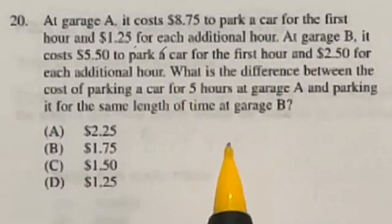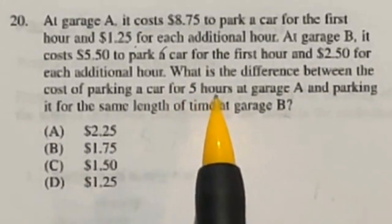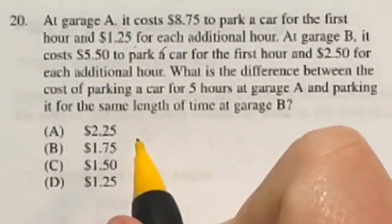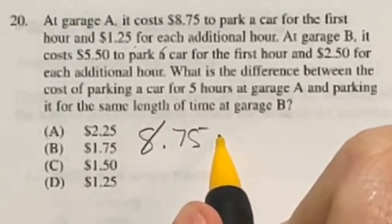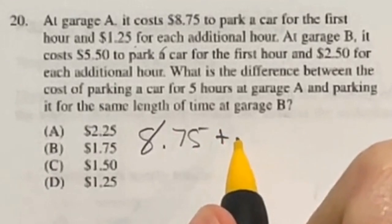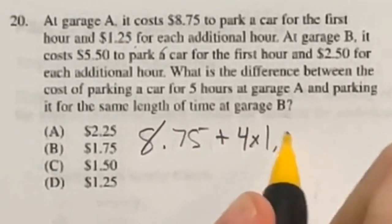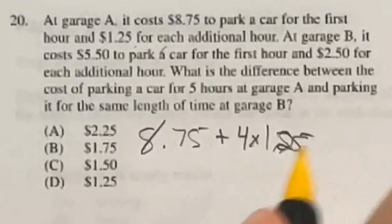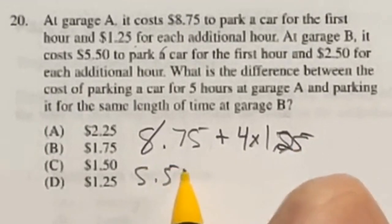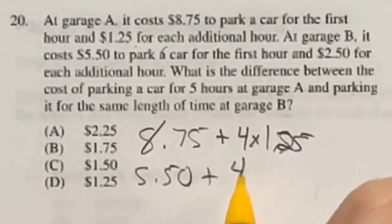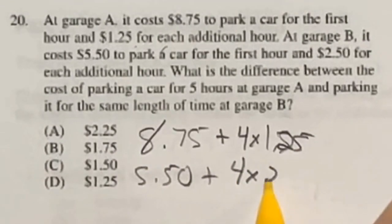So you're looking at two different garages here, A and B. You're going to be there for 5 hours. Now for garage A, for that first hour, it's going to charge $8.75. And then for the next 4 hours, it's going to be $1.25 each. So 4 times that $1.25. Likewise, down here for B, we're going to be starting at $5.50 for that first hour, plus the other 4 hours at $2.50 each.